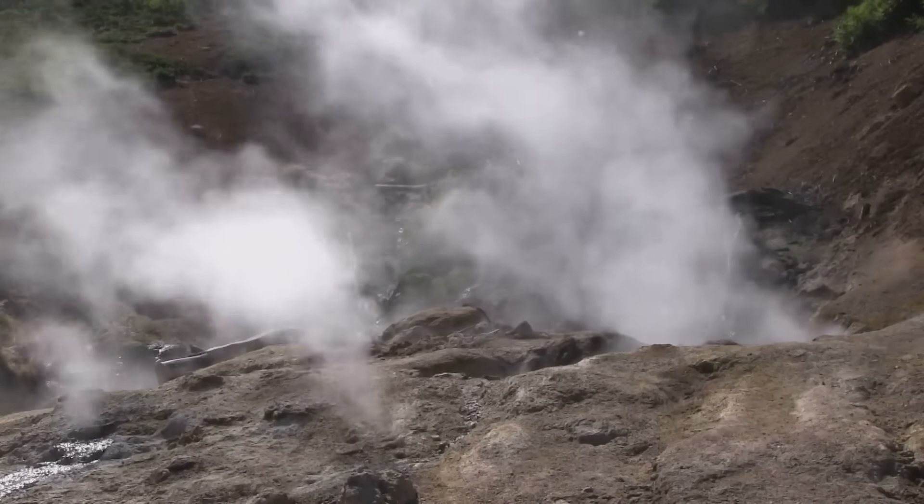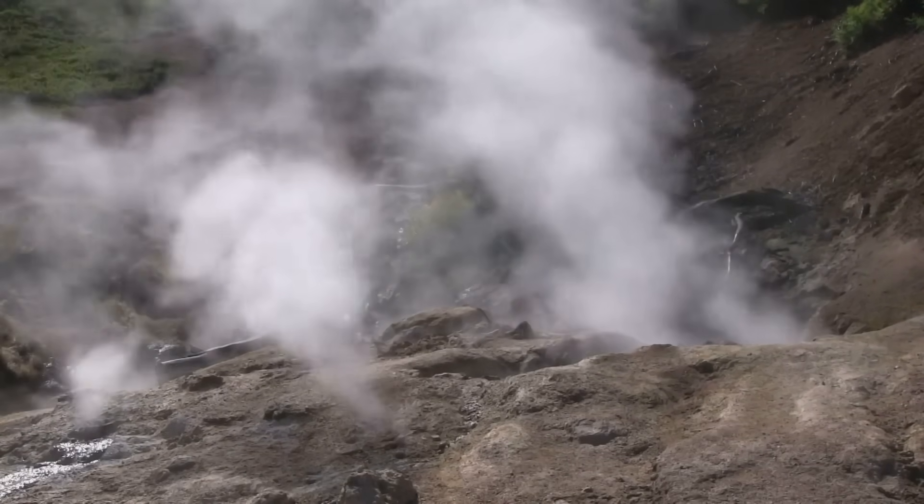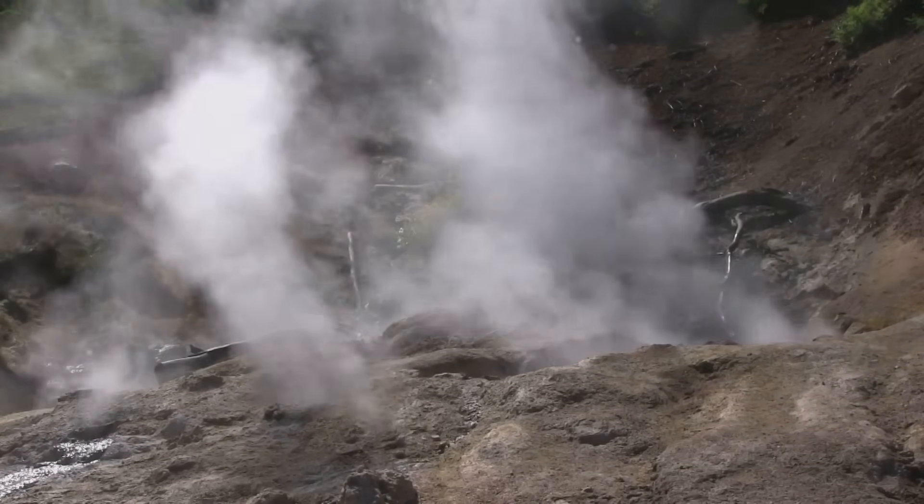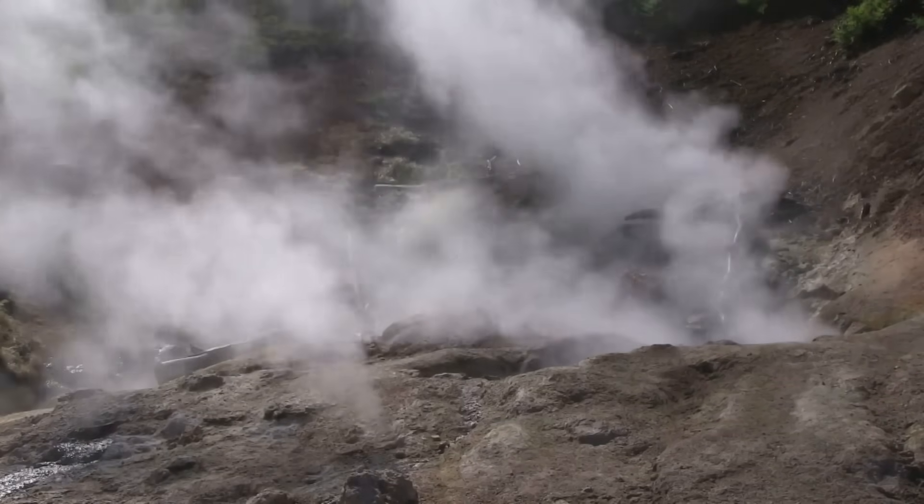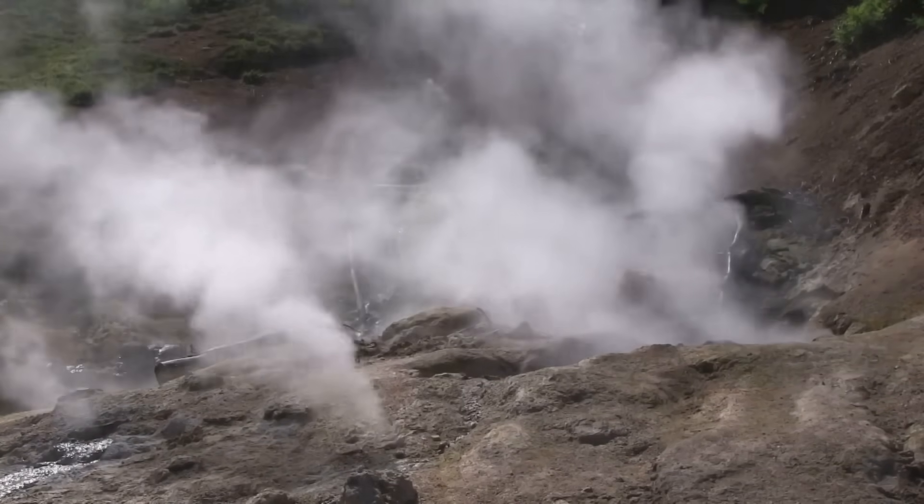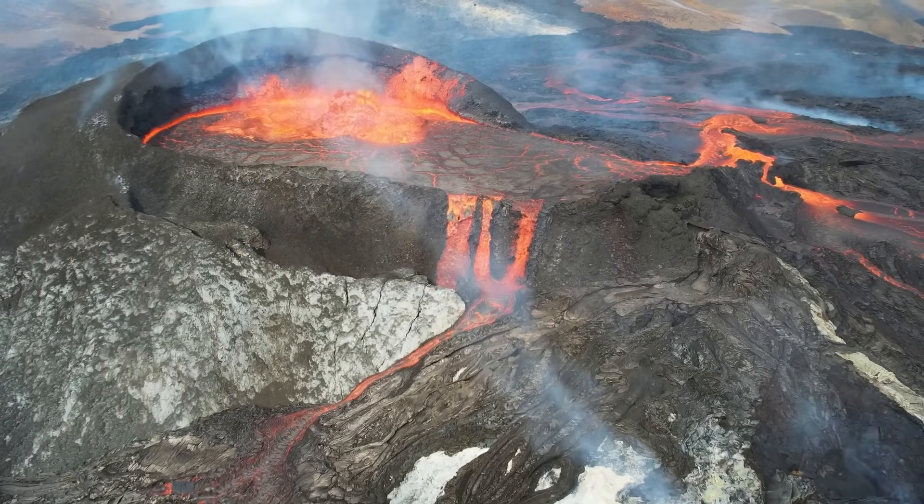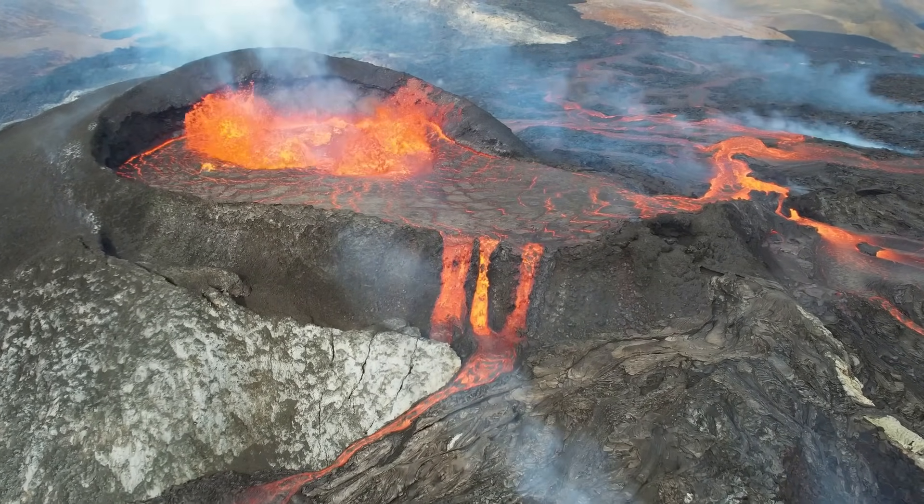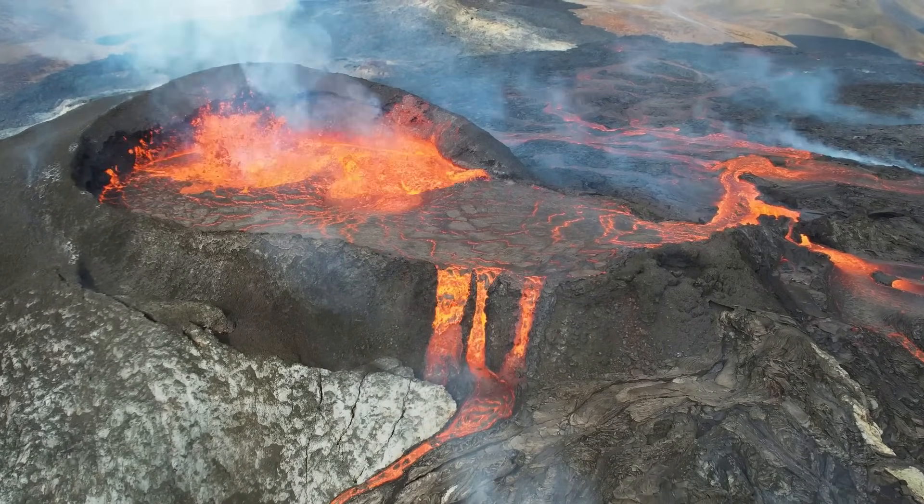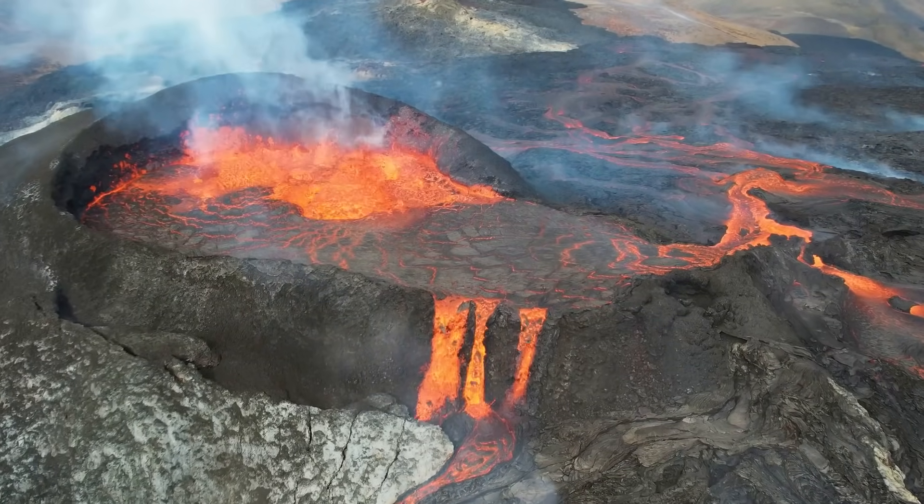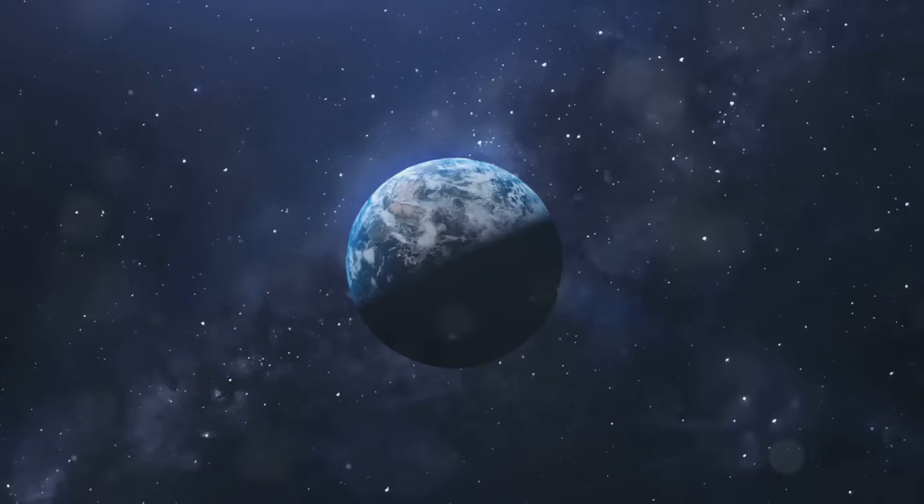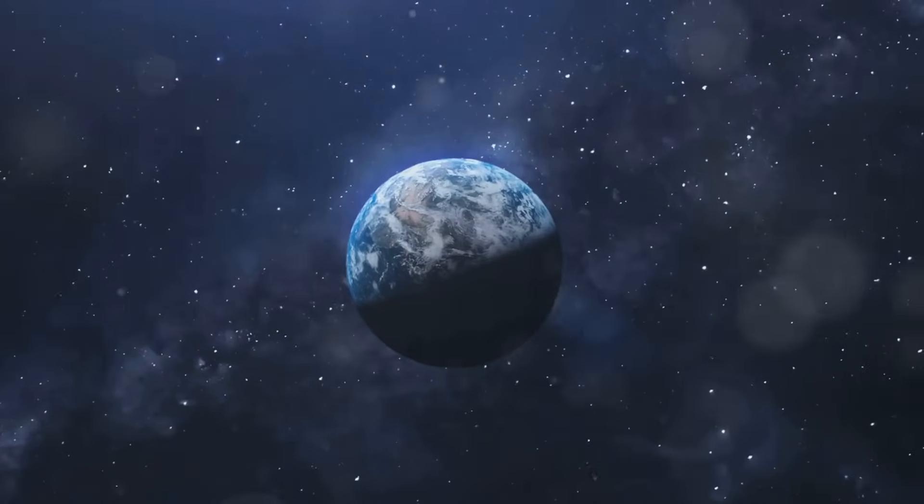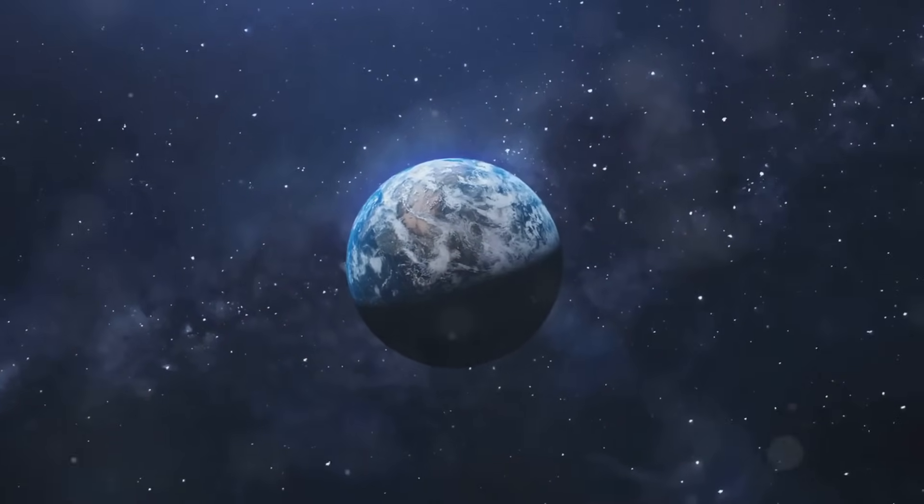During this time, volcanic activity was rampant. Volcanoes erupted frequently, releasing vast amounts of gases into the atmosphere. These gases, primarily water vapor, carbon dioxide, and nitrogen, began to form the early atmosphere. This atmosphere was very different from the one we know today, lacking oxygen and being much thicker and hotter.